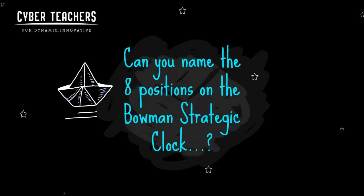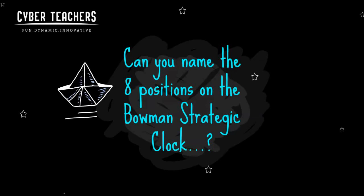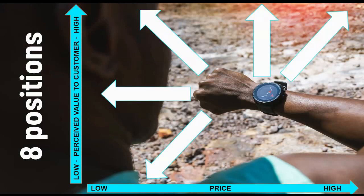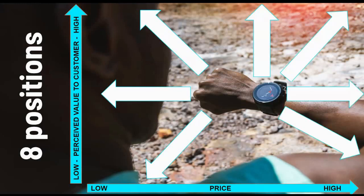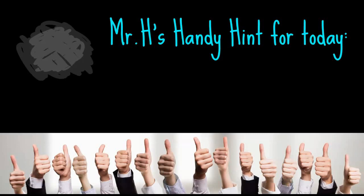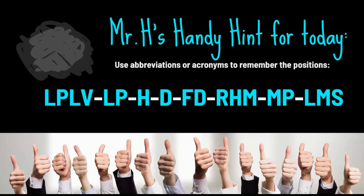Can you name the eight positions of the Bowman Strategic Clock? You can now pause this video and write them down, make a list, or use the blank slide I've added in. You can draw this on a piece of paper, screen print it, or print it off and test yourself. Mr. H's handy hint for today: use abbreviations or acronyms to remember the positions.